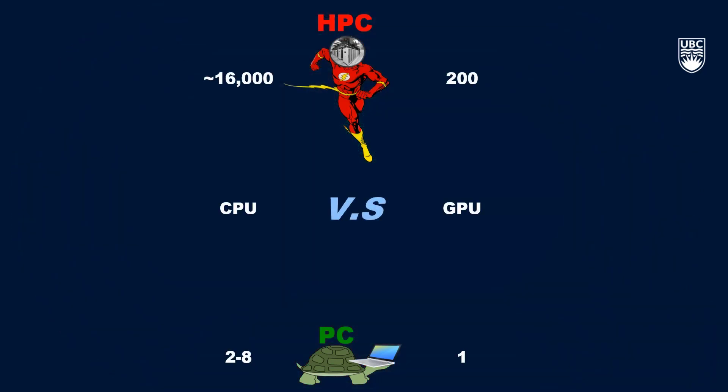UBC Arc Sockeye has just under 16,000 CPU cores and 200 GPUs, so you can start to get a feel for just how big the system really is and the type of work it's capable of.